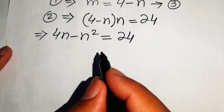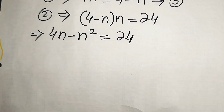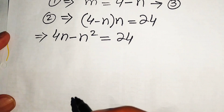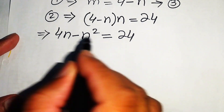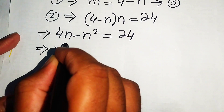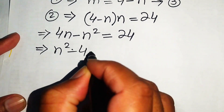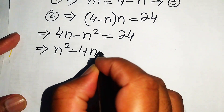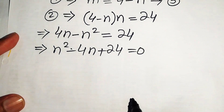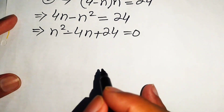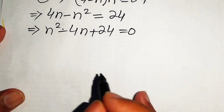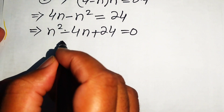This is a quadratic equation but not in standard form. We rearrange by moving all terms to the right-hand side, giving us n squared minus 4n plus 24 equals 0. This is now in standard quadratic form.